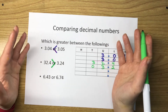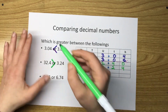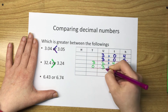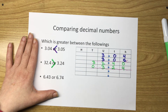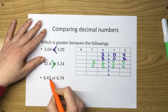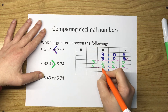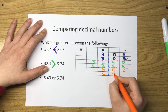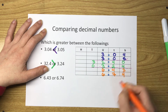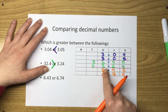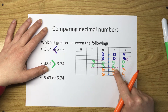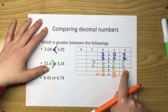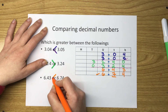For those who always mix up how to write the comparison signs: always the open side points towards the greater number. Next example: six point four three or six point seven four. Six in the units, four in the tenths, three in the hundredths versus six in the units, seven in the tenths, four in the hundredths. Both share the same units. In the tenths: four versus seven — seven is greater. So six point four three is less than six point seven four.